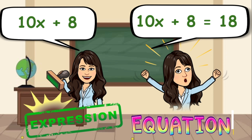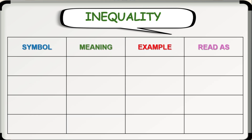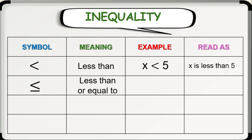Now, what is an inequality? Inequality is a mathematical expression that contains inequality signs. To write an inequality, we use the following symbols. First, we have the symbol for less than. For example, x is less than 5. Next, we have the symbol for less than or equal to. For example, x is less than or equal to 5.